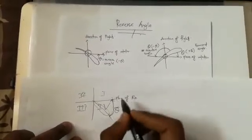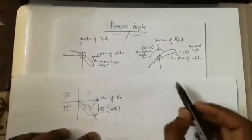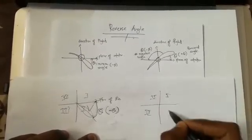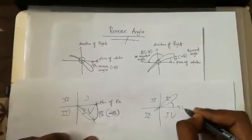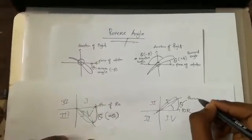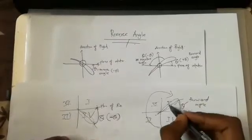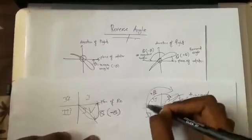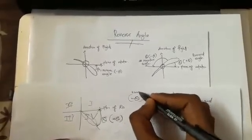However, the direction of the angle is in reverse, therefore it is known as a negative angle, which is also called the reverse angle. In the next example, the blade is in the first quadrant. The blade angle measured clockwise from the plane of rotation to the cord line is the forward angle. But at the same example, we can illustrate the reverse angle, which goes in an anti-clockwise direction — this is also known as the reverse angle.